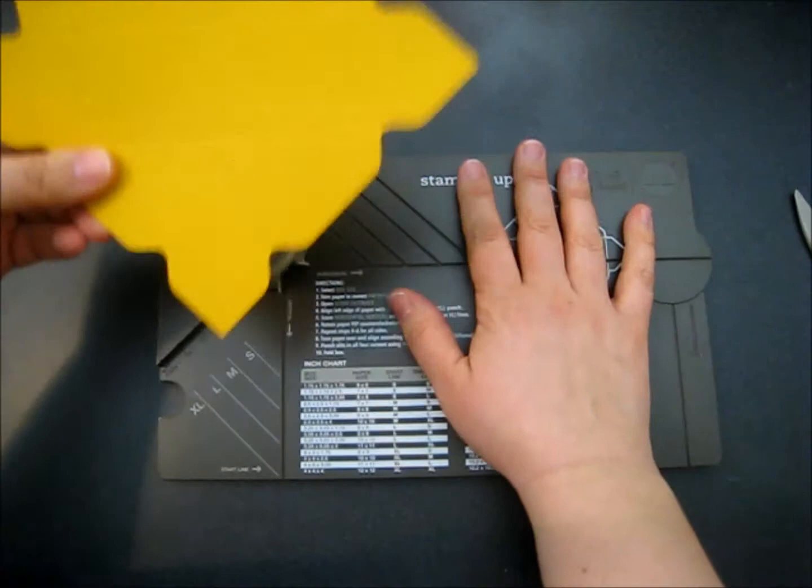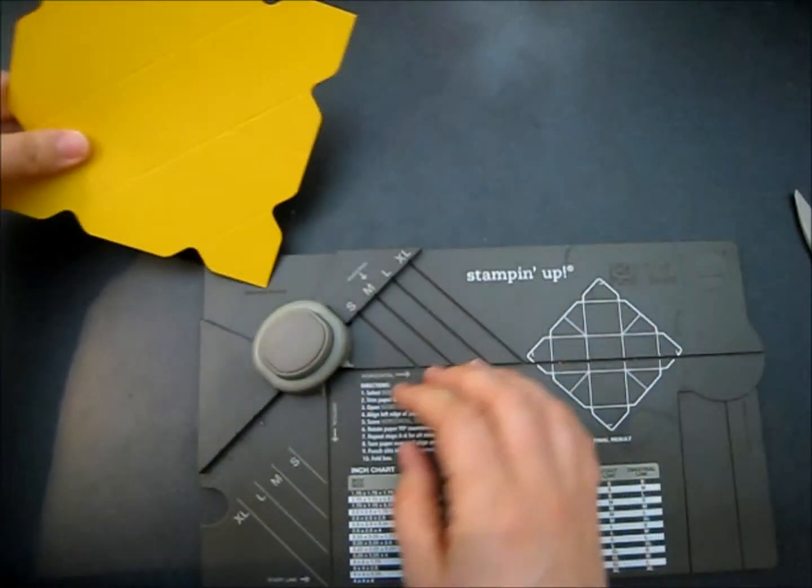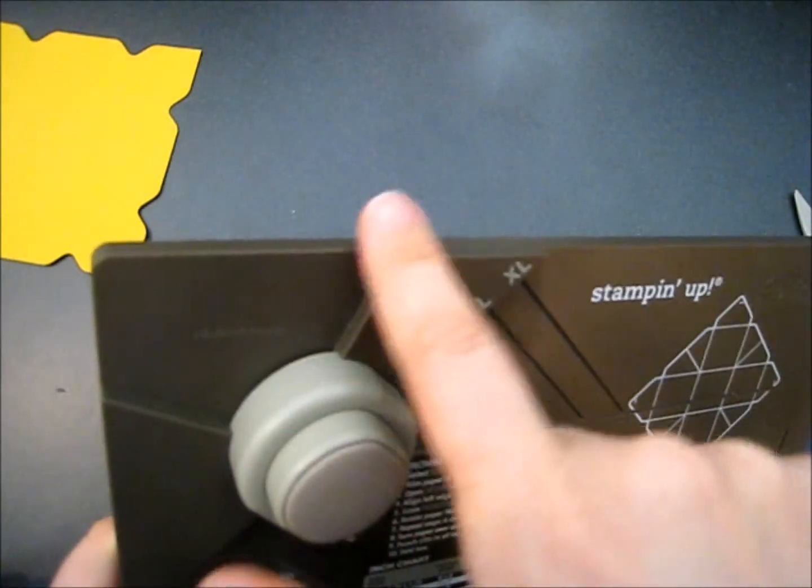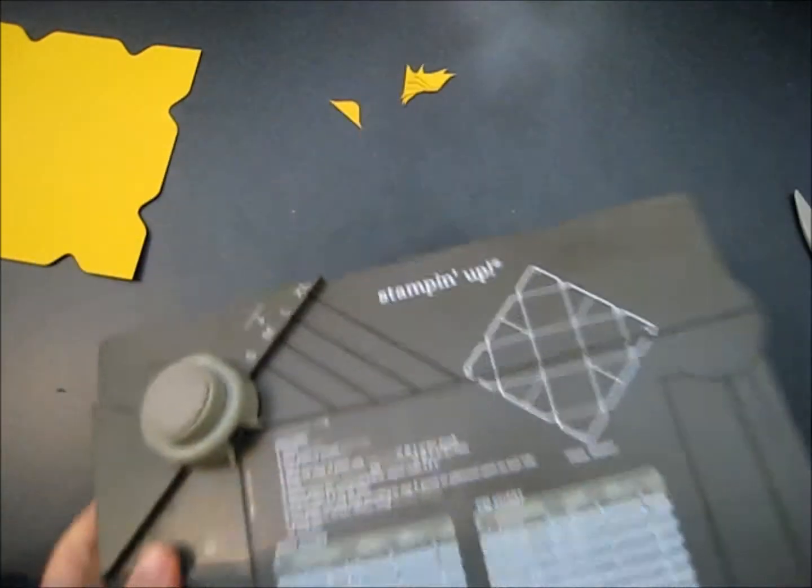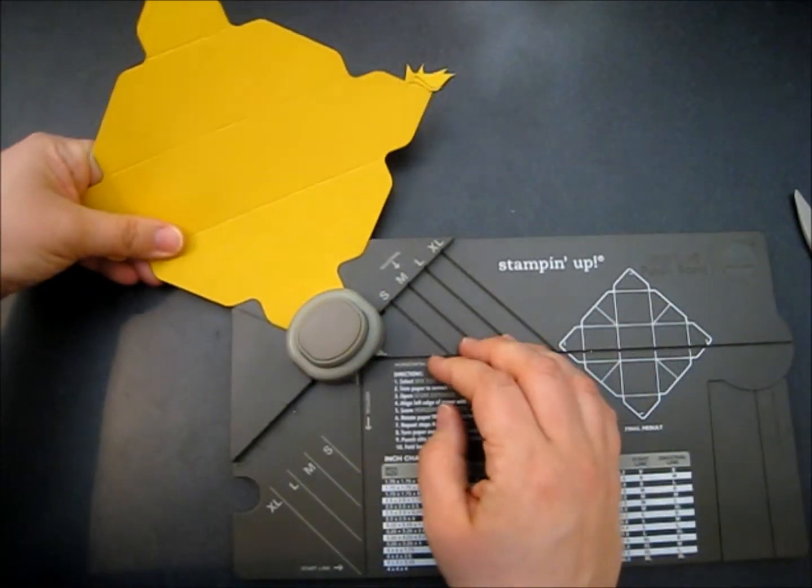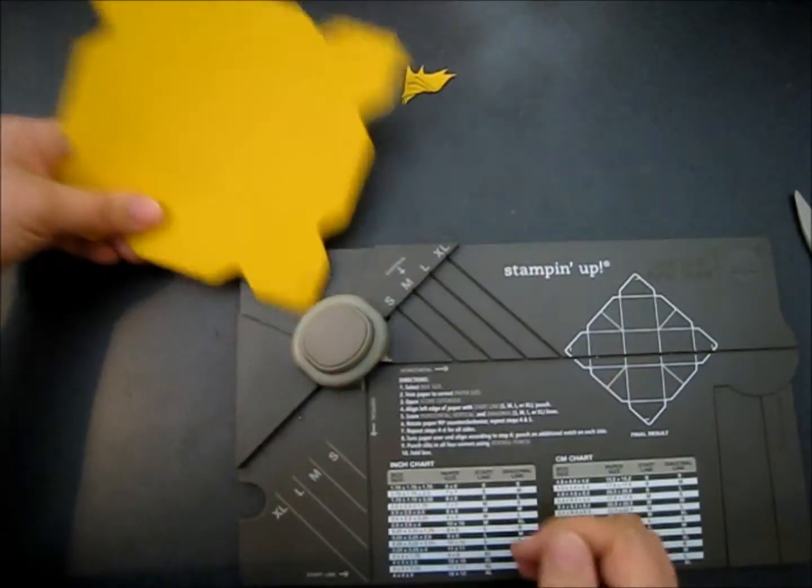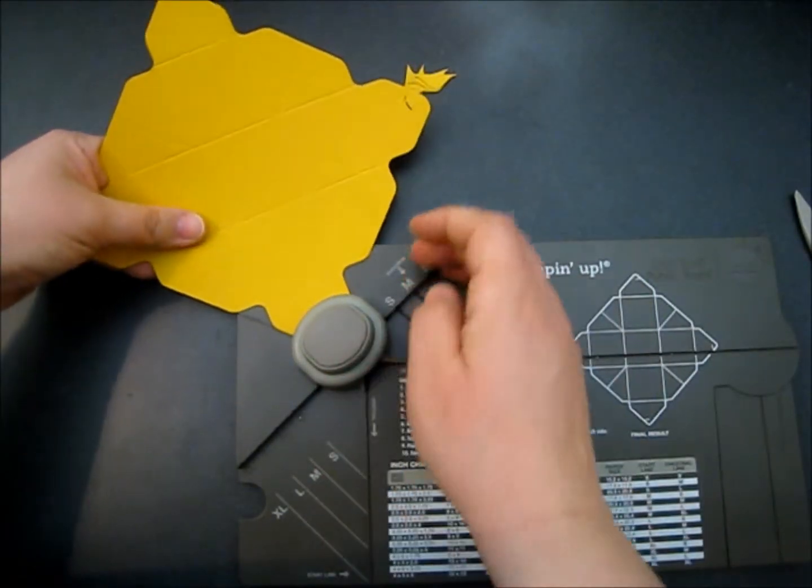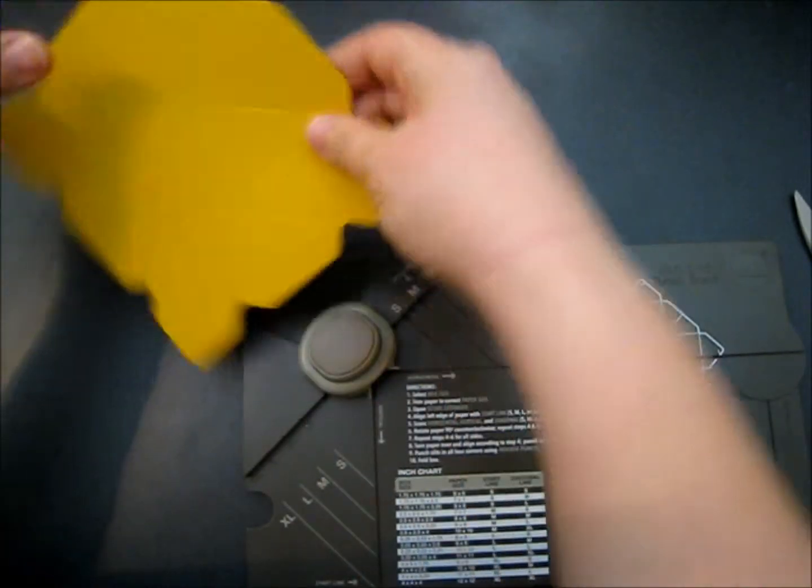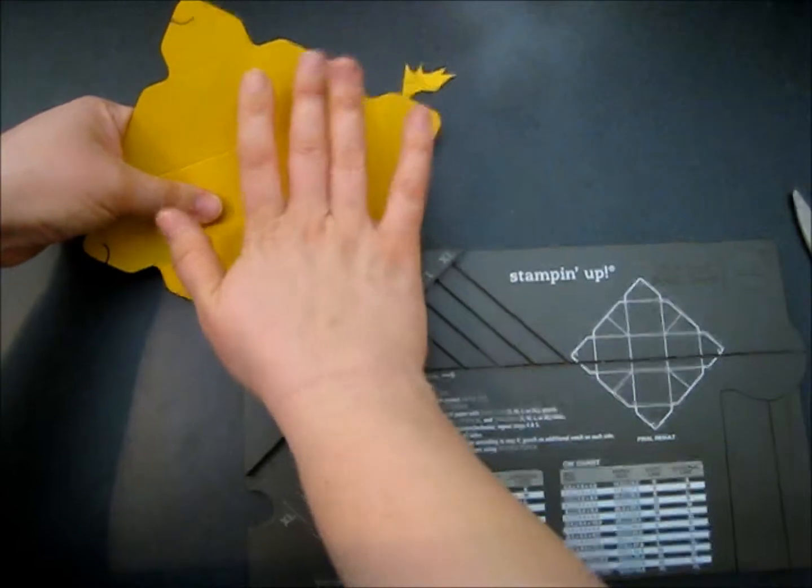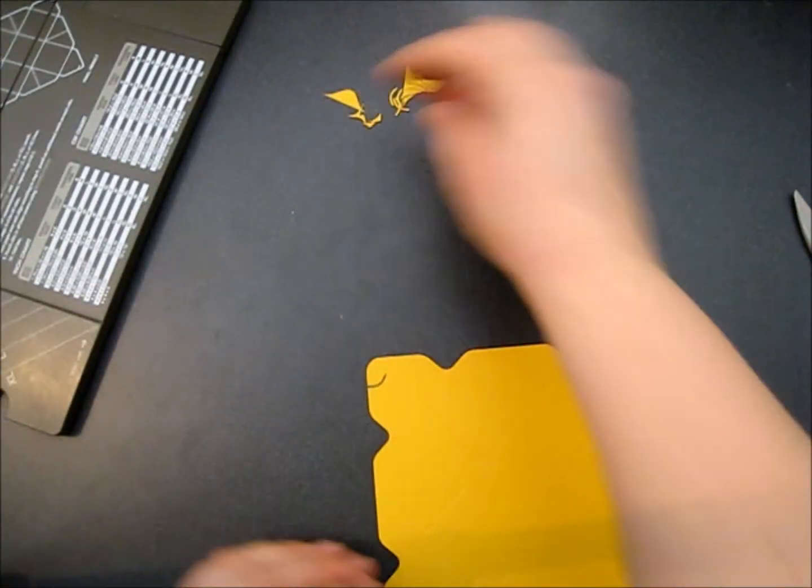And then what you're going to do is you're going to take your piece of paper and you're going to put it in the other way. So we've got a little groove here to punch our corners. So you're going to put your corners in here and punch and you're going to end up with this little hook. And that is what you're going to use to close your box. It also corner rounds the edges. Makes it look nice and pretty. So we're all done with that.